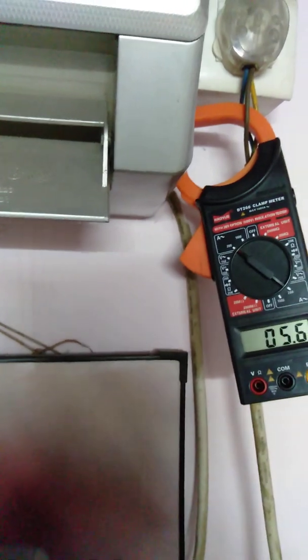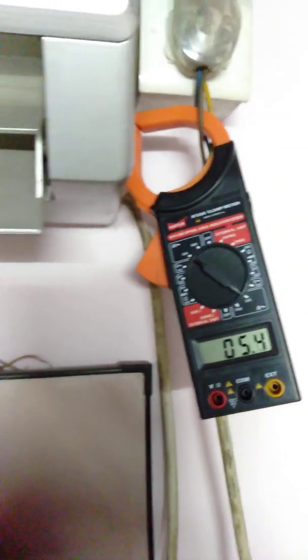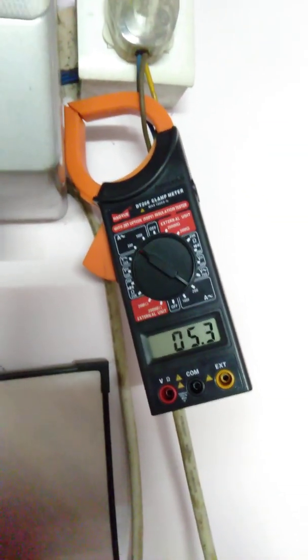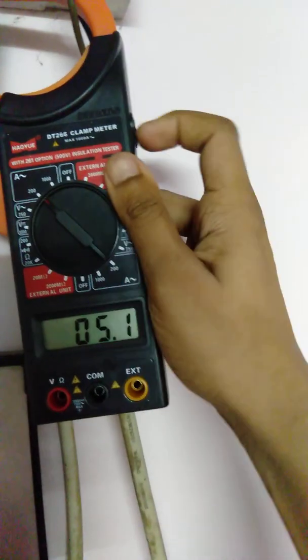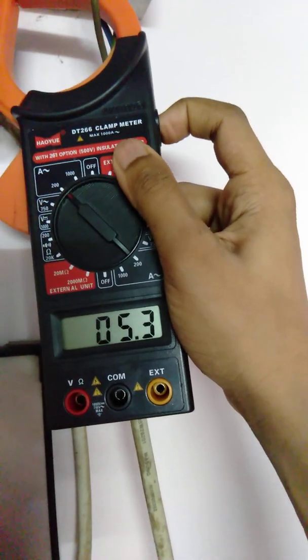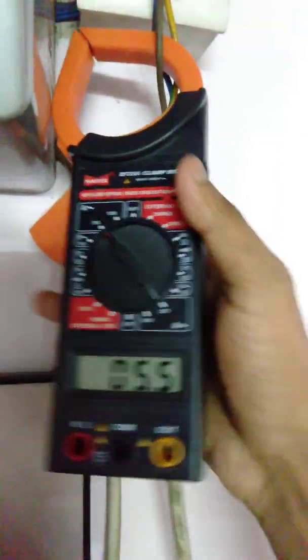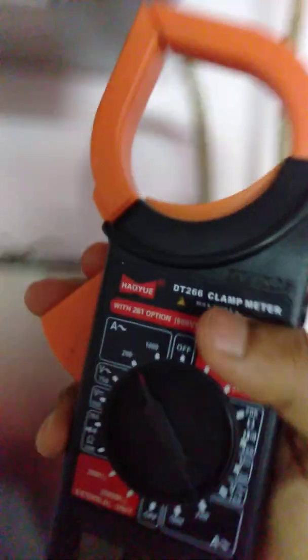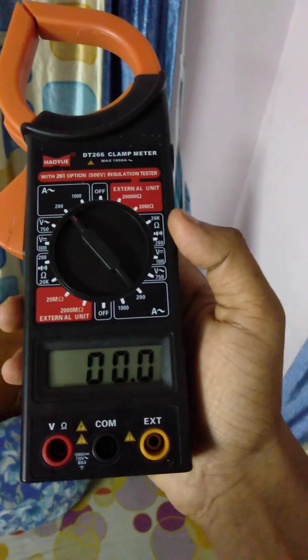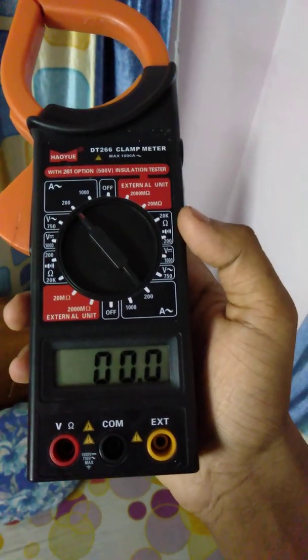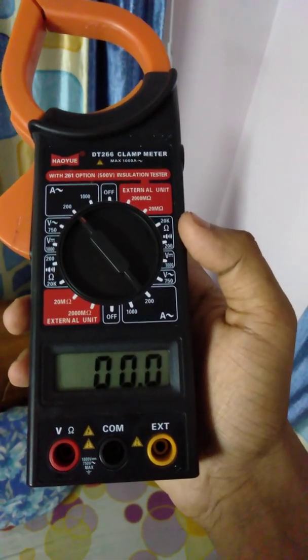But the resistance is literally off limits for this clamp meter, and it's pretty much fluctuating too much. So a specific feature of this clamp meter is that when the current goes higher, the accuracy goes higher too.